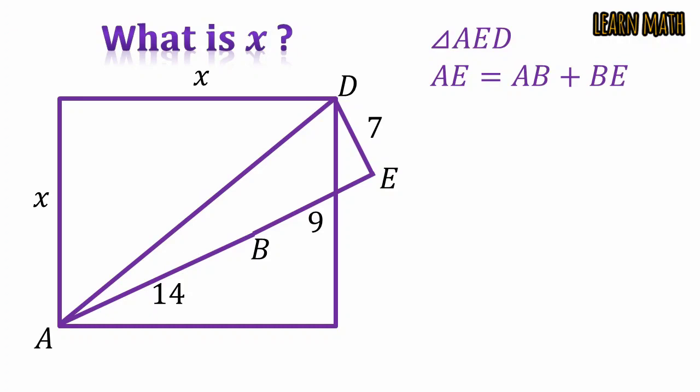AB is equal to 14 and BE is equal to 9. Putting the values we will get AE is equal to 23.